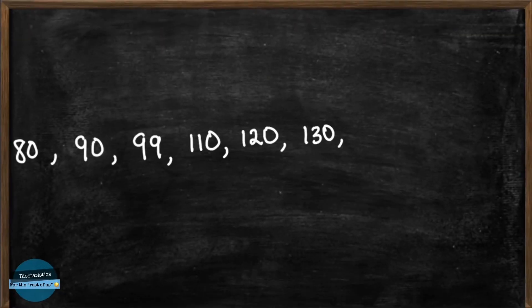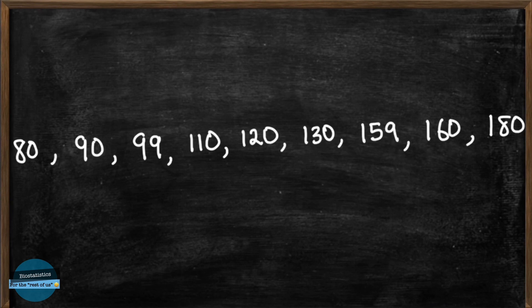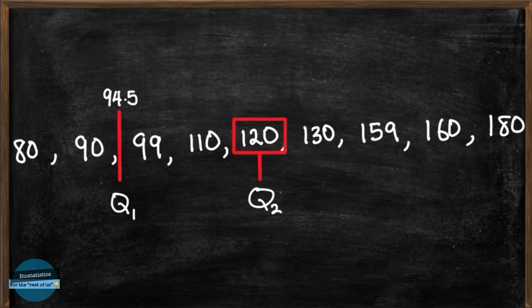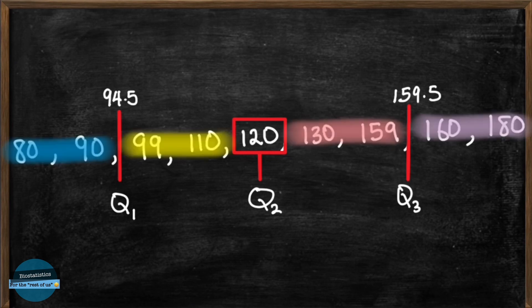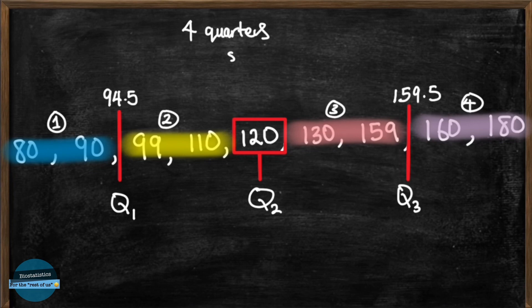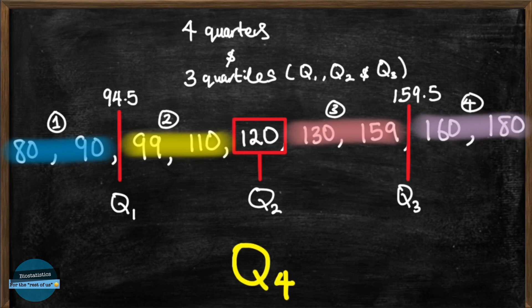So the quartiles for this data set of systolic blood pressures are Q1 equals 94.5 millimeters of mercury, Q2 equals 120 millimeters of mercury, and Q3 equals 159.5 millimeters of mercury. We can see that with the quartiles, our data is divided into four equal parts. That's four quarters. Please know that there are four quarters and only three quartiles: Q1, Q2 and Q3. There is no such thing as Q4, as a lot of people make this mistake. So the three quartiles help us to divide our data into four equal quarters.